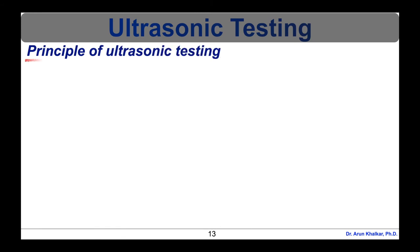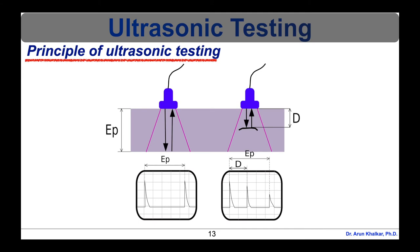Now let's see the principle of ultrasonic testing. As shown in this diagram, left hand side, a probe sends a sound wave into a test material. There are two indications: one from the initial pulse of the probe and the second due to the back wall echo. On the right hand side, a defect creates a third indication and simultaneously reduces the amplitude of the back wall indication. The depth of the defect is determined by the ratio D/EP as shown in the graphs in the diagram.